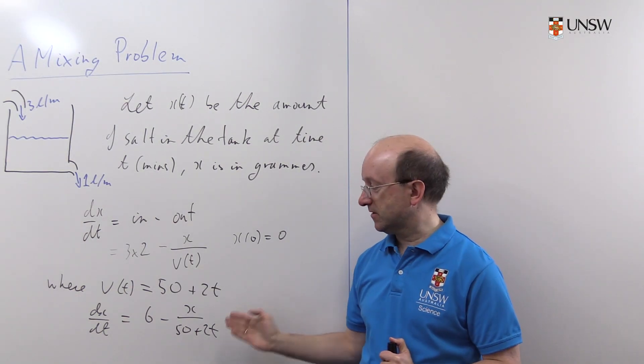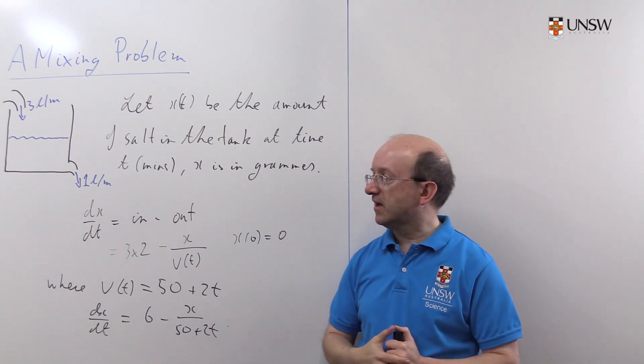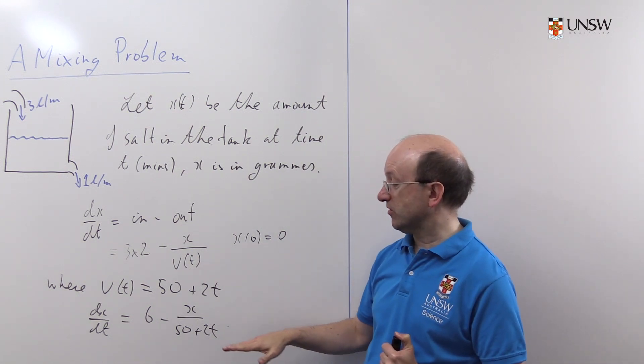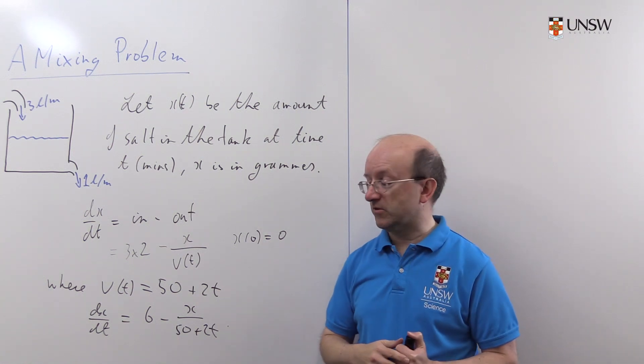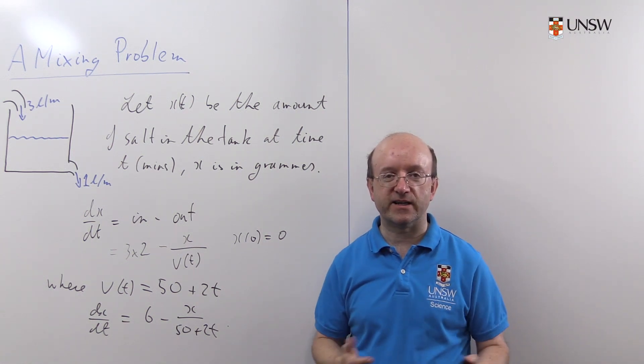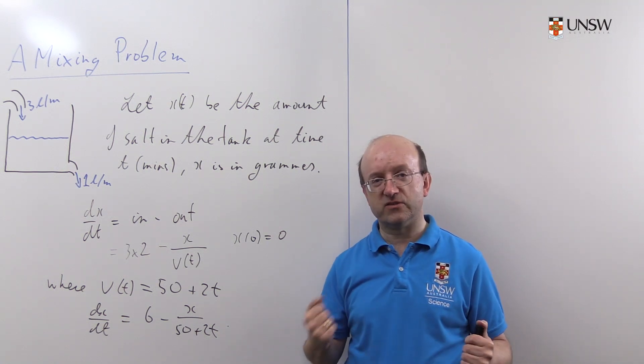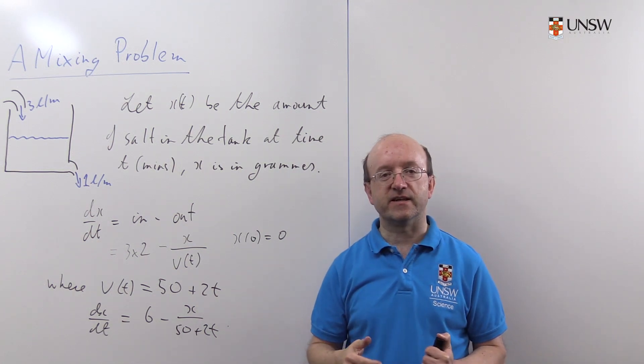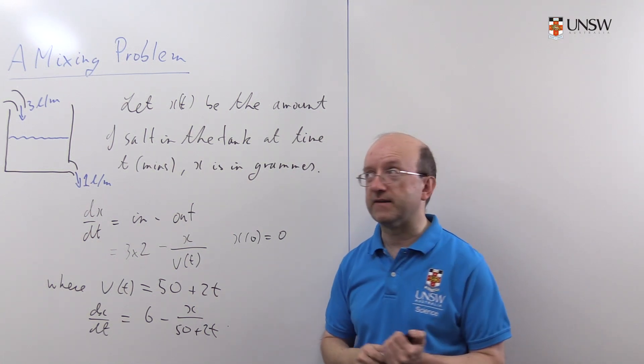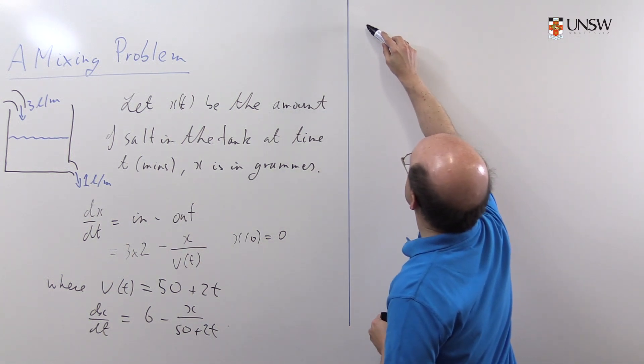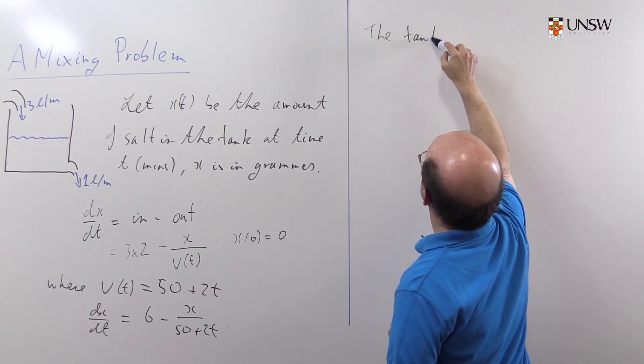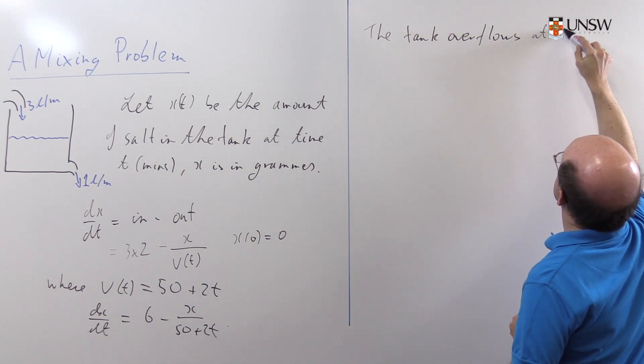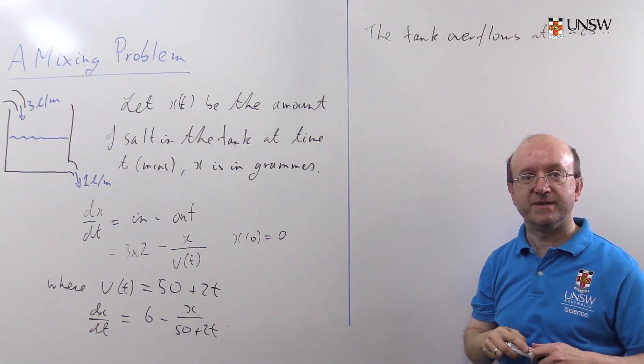So that's the first part of the problem done. We've set up the differential equation. The second part of the problem asked us to find out how much salt there was left in when the tank overflowed. Well, our first problem is to work out when does the tank overflow. The tank is a 100 litre tank and the volume is 50 plus 2t. That's in litres, of course. So quite clearly, the tank is going to overflow when t is 25. That's 25 minutes, of course.